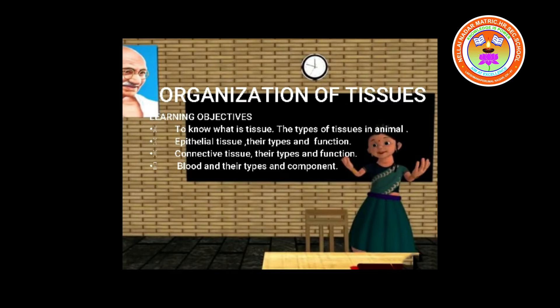Squamous epithelium is found in the lining of the lungs and skin. They have square-like cells. The skin has many layers of squamous epithelium but only one layer in the lungs. Why does skin have multiple layers? Because skin protects, hence it has many layers. The lining of the lungs has a single layer because during respiration, oxygen enters the lungs and is transported to blood, requiring only one layer of cells for its transfer.